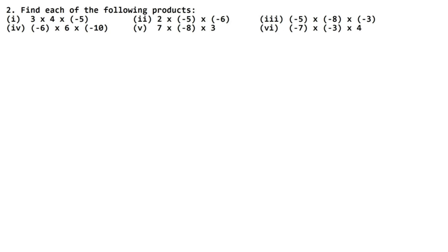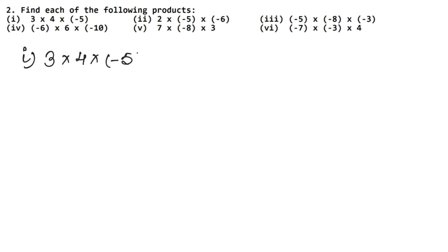The question says: Find each of the following products. We have to work out all these products. In the first part, we have to multiply 3 by 4, and then multiply by minus 5.